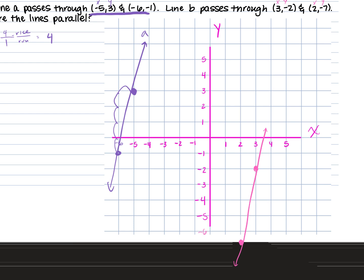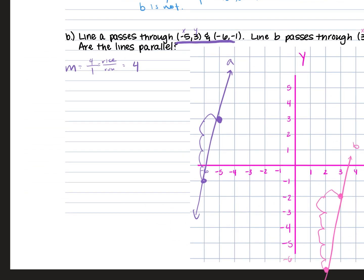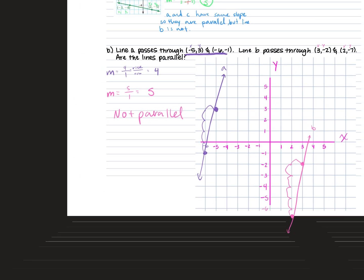Now let's find the slope for line B. Counting rise over run: up 5 and to the right 1, so slope is 5 over 1, which is just 5. These are not the same, so these lines are not parallel. They have to be exactly the same slope in order to be parallel.